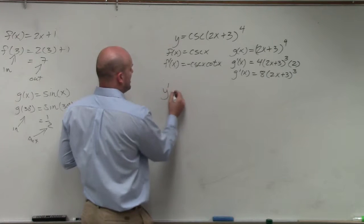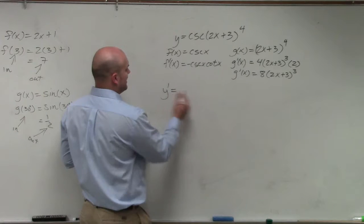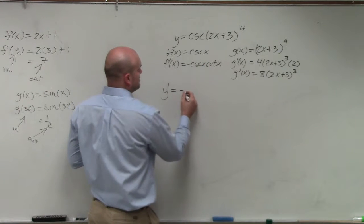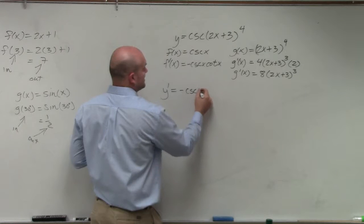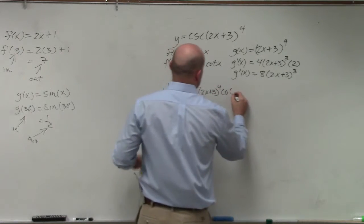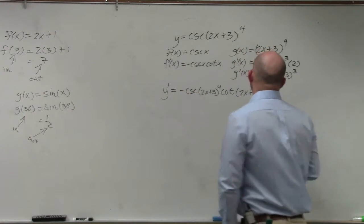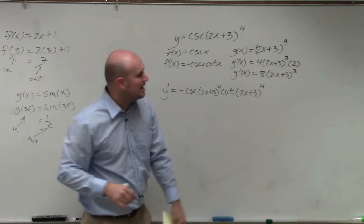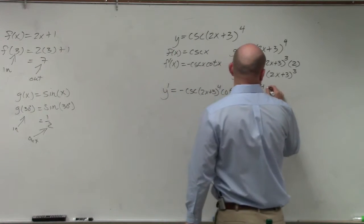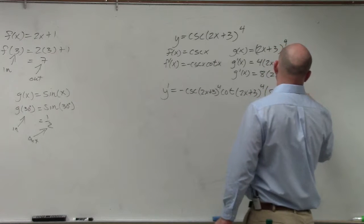So y prime is now going to equal, we have our negative cosecant of g of x. So it's going to be negative cosecant of 2x plus 3 to the fourth, cotangent of 2x plus 3 raised to the fourth, and then times g prime of x, which in this case is going to be 8 times 2x plus 3 cubed.